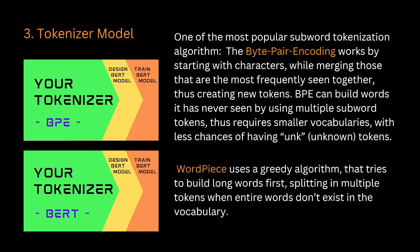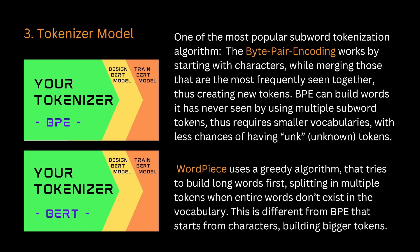More or less the complete opposite path is taken by WordPiece. WordPiece tries to build long words first, then starts to split those words into multiple subword tokens — completely different, as you can see. If you have to choose, I would recommend in general you go first with BPE.